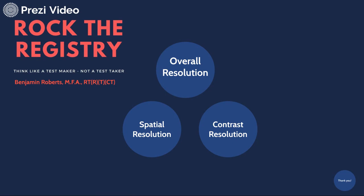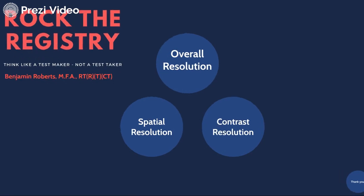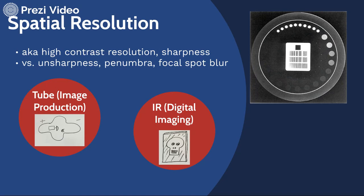Let's talk about spatial resolution in particular. When we're talking about spatial resolution, there's actually two different ways to talk about spatial resolution now, which wasn't necessarily the case a few years back when we talked about film. We can talk about spatial resolution from the standpoint of image production. We can also talk about spatial resolution in terms of the image receptor.